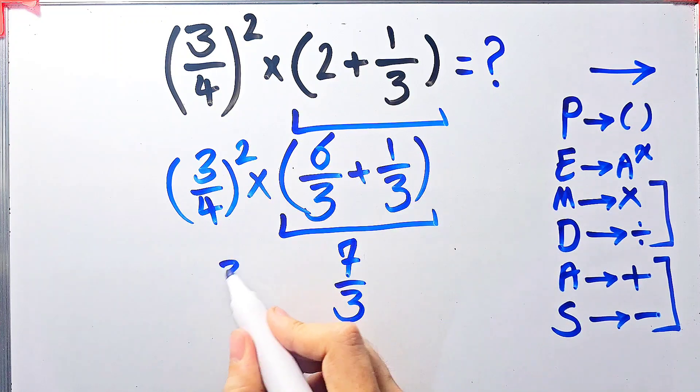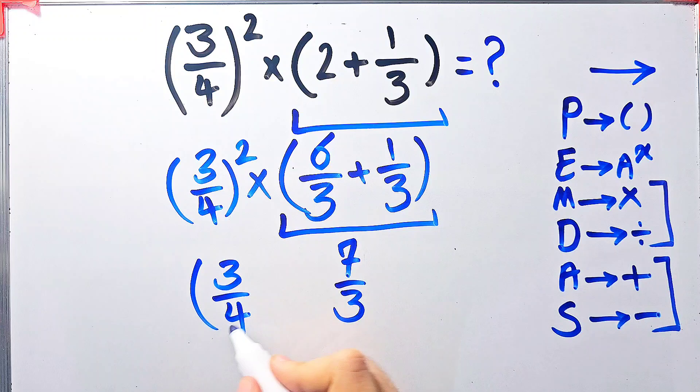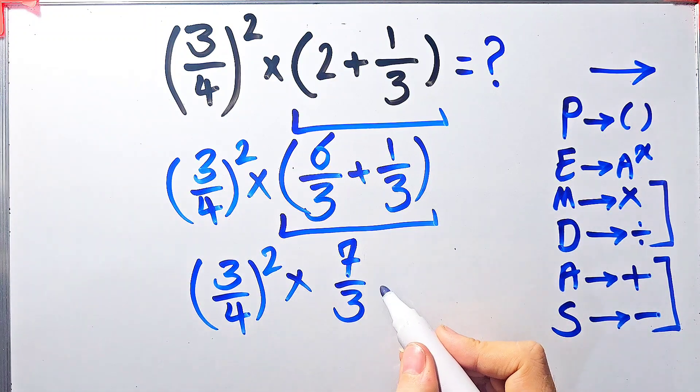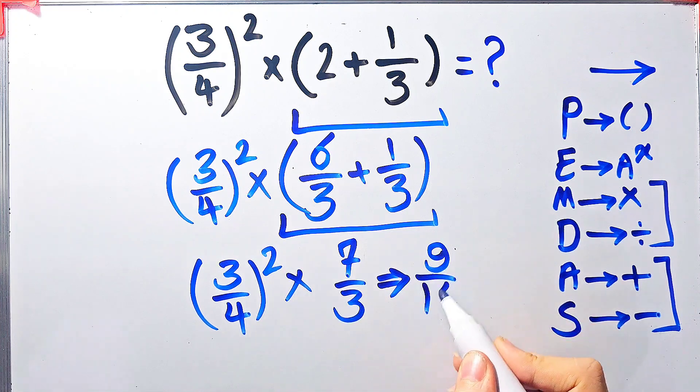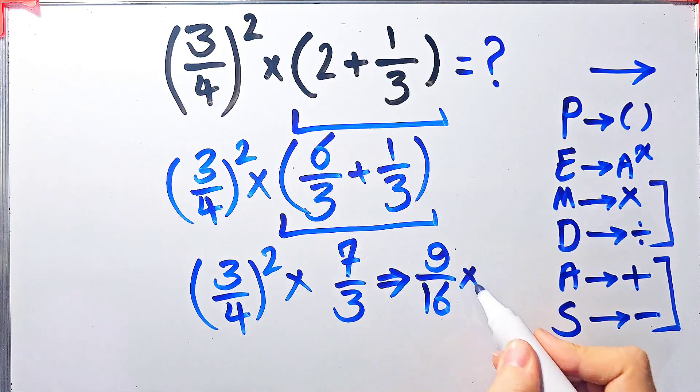Now we have 3 over 4 to the power of 2, then times 7 over 3. 3 over 4 to the power of 2 equals 9 over 16. Now we have 9 over 16 times 7 over 3.